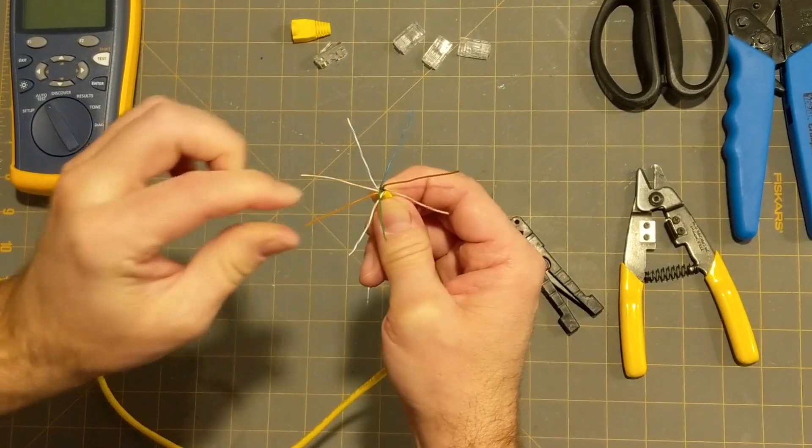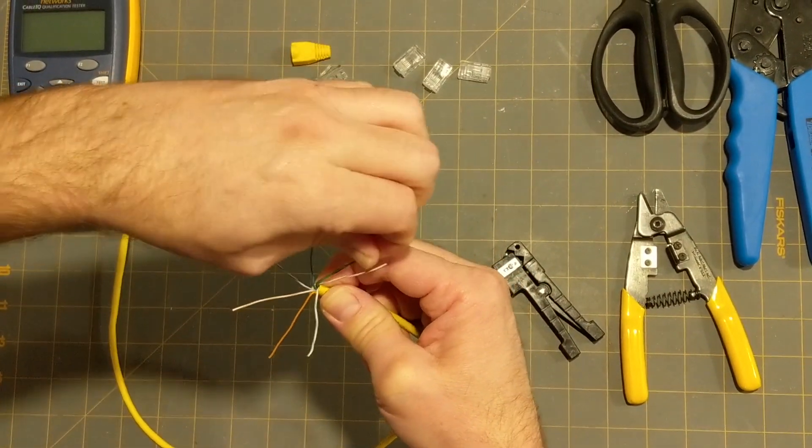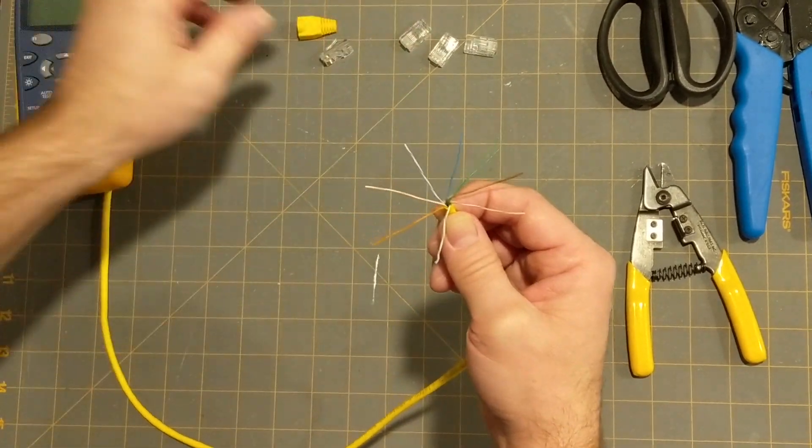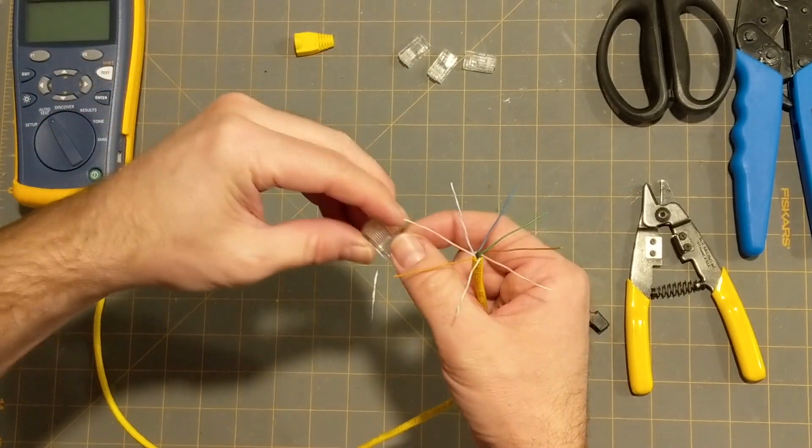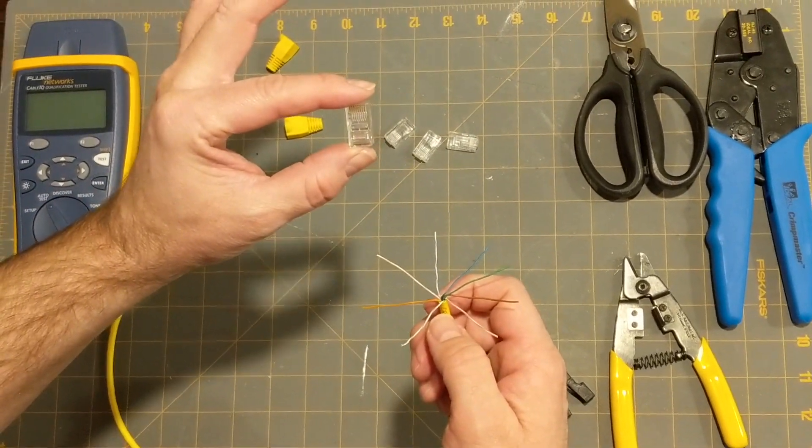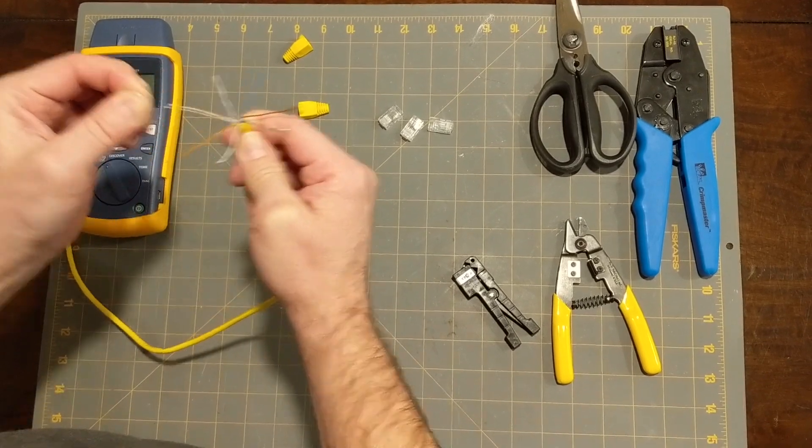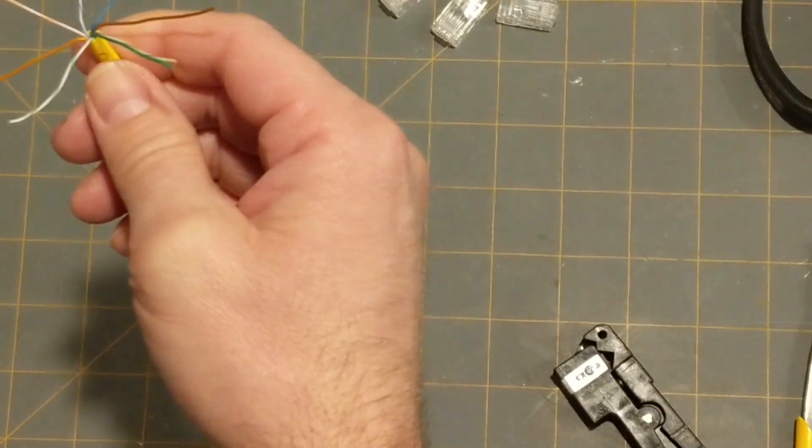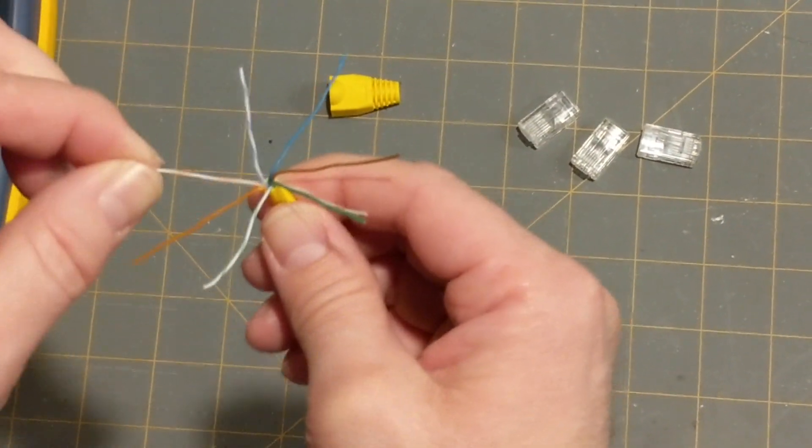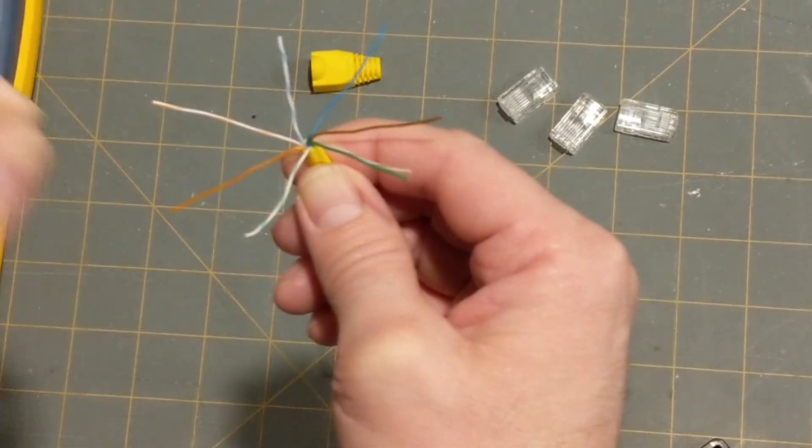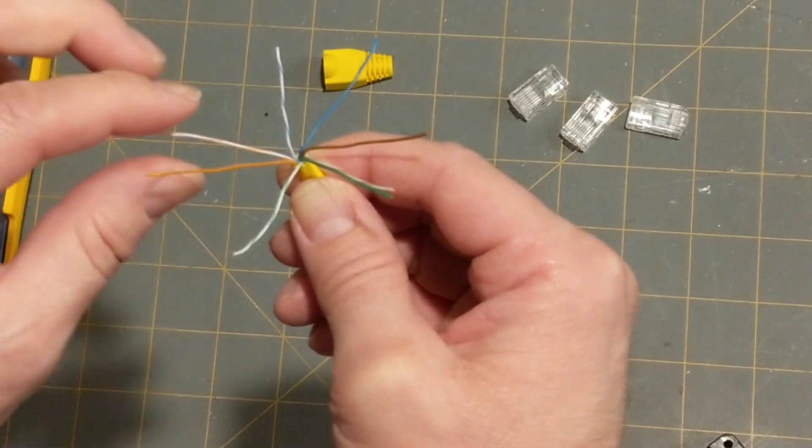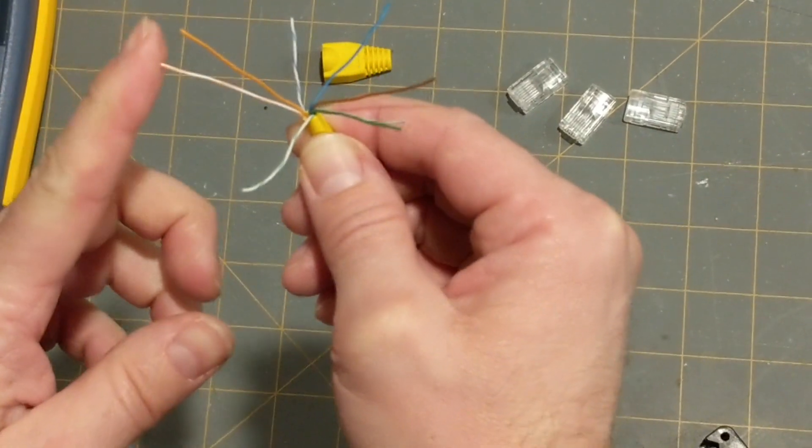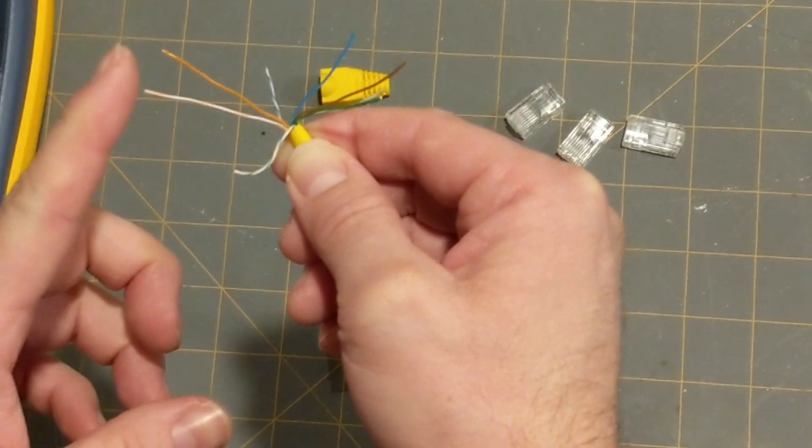And then, our job is to put these in order. And we're going to arrange them from left to right in a particular order that's going to make them line up in a correct order in this connector. The order for Cat5, for a cable this short, can be one of two arrangements. And I'm just going to choose one of the most common. We're going to choose the white-orange. You'll notice the white-orange and the orange pair were together. So, white-orange, then orange next to it. So, from left to right, white-orange, orange.